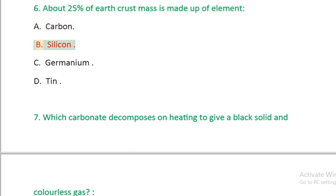Question 6: About 25% of earth crust mass is made up of element: A. Carbon, B. Silicon, C. Germanium, D. Tin.